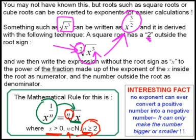Here's an interesting fact: no exponent can ever convert a positive number into a negative number. It can only make the number bigger or smaller. It doesn't matter how small, how big, how positive, or how negative your exponent is — it can never change the sign of the number you're working with. For instance, 4 to the power of a million, 4 to the power of 1 over a million, or 4 to the power of minus a million — it will never become minus 4.